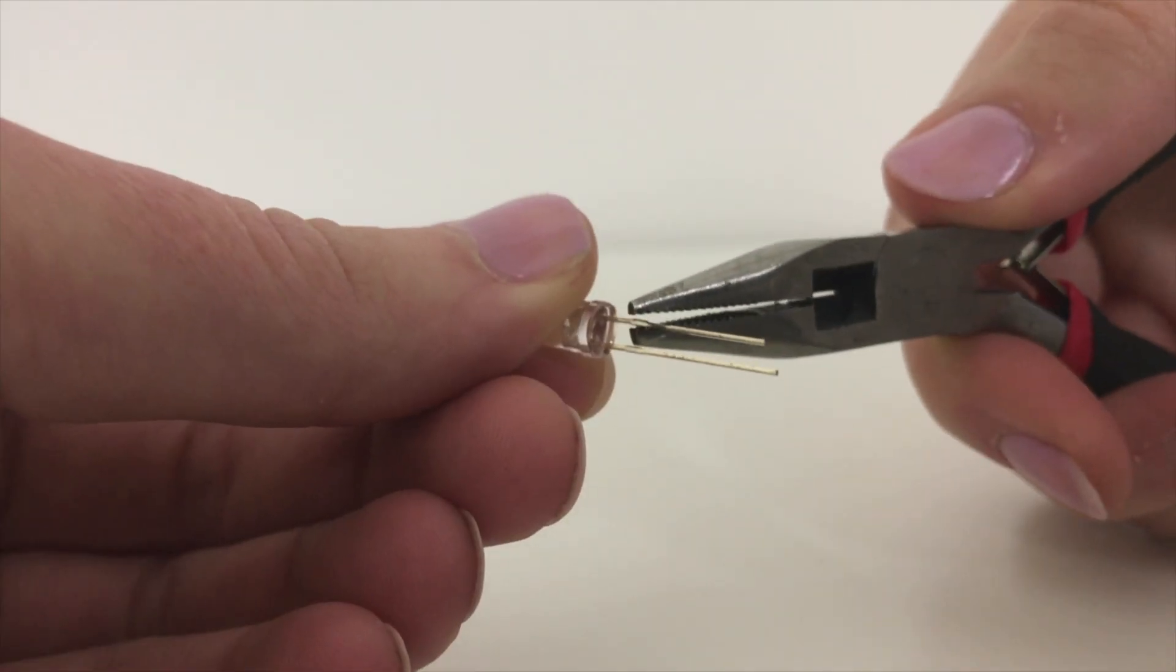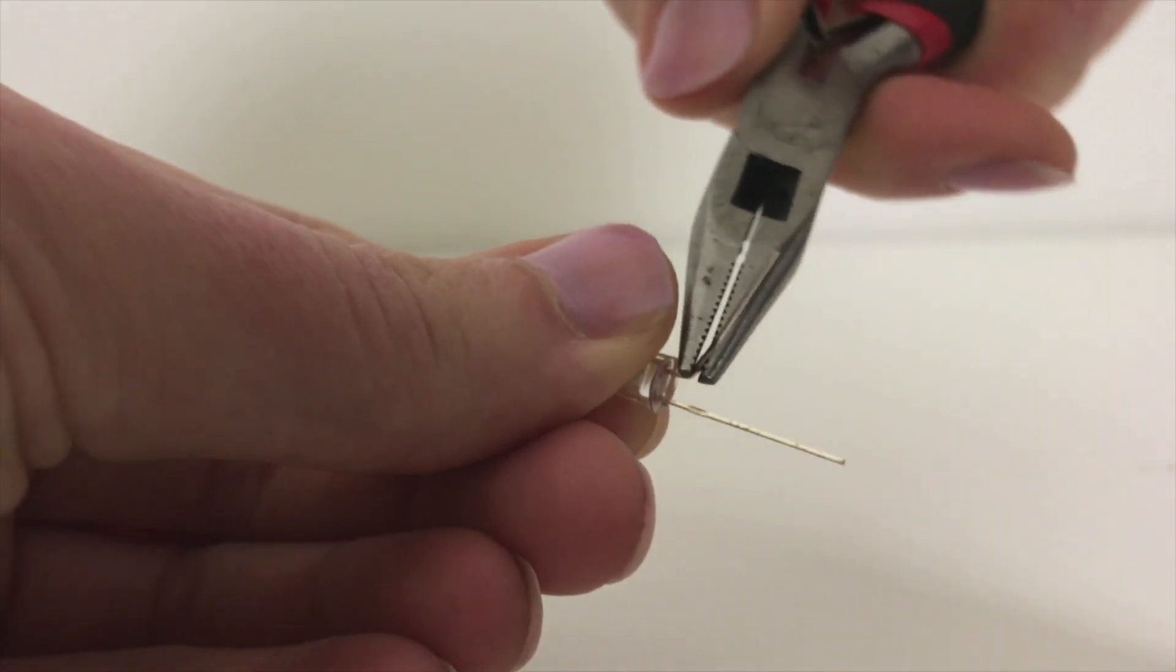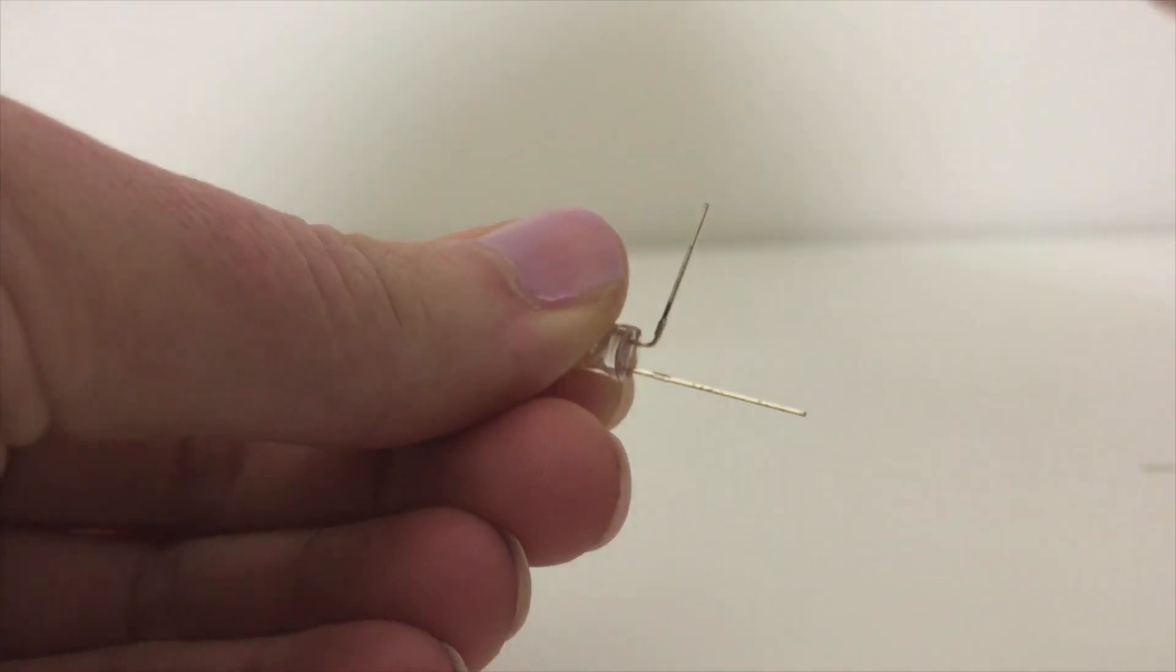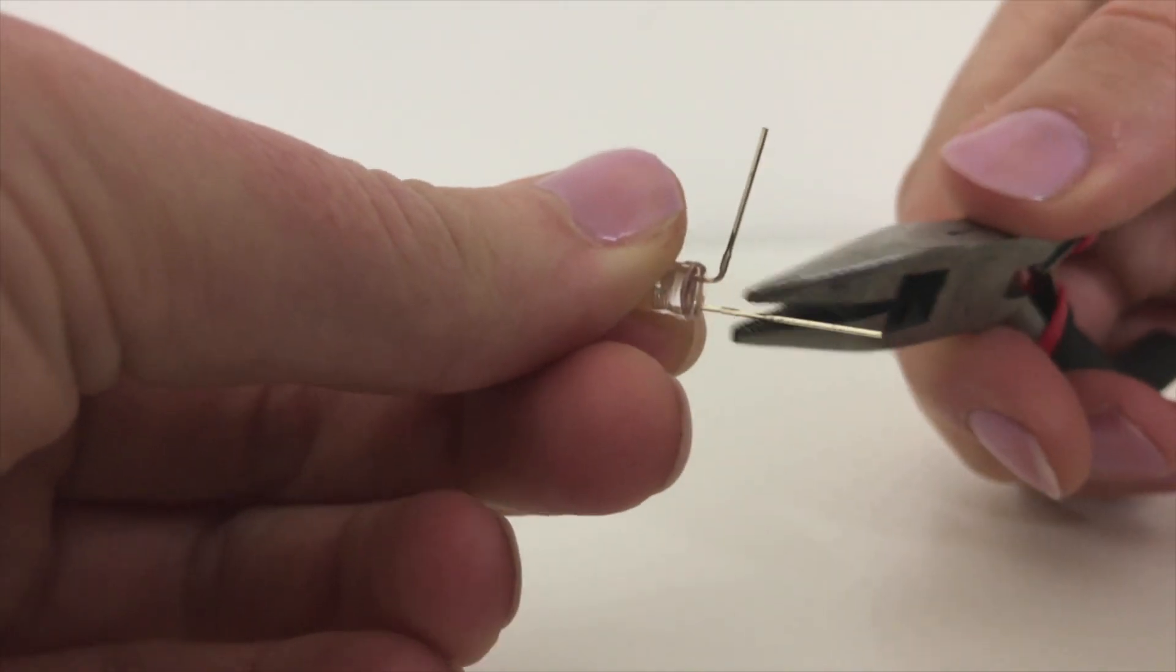Next, use pliers to turn the posts at 90 degree angles. Be careful not to break the LED at this point, as some LEDs are weaker and the anode or cathode can snap off.